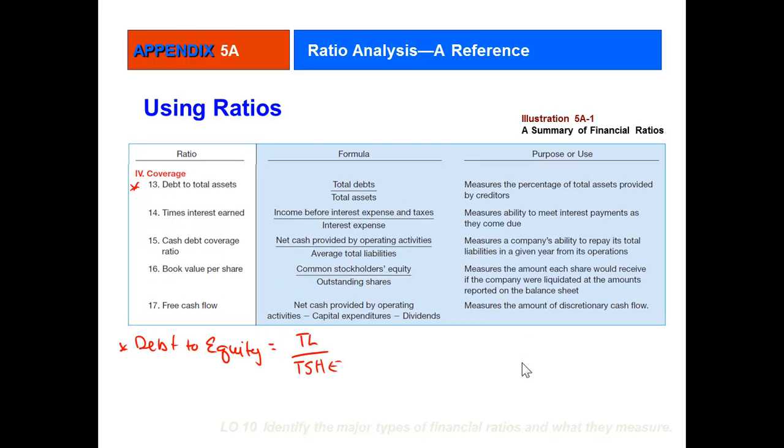Finally, coverage. Coverage has to do with how well a company is meeting its responsibilities—either short-term or long-term liabilities. Debt to total assets looks at total debts, or total liabilities, over total assets to give you a percentage. Another way to look at it is debt to equity, where you're looking at total liabilities—your responsibilities to creditors—over total shareholder's equity, which are your responsibilities to shareholders.